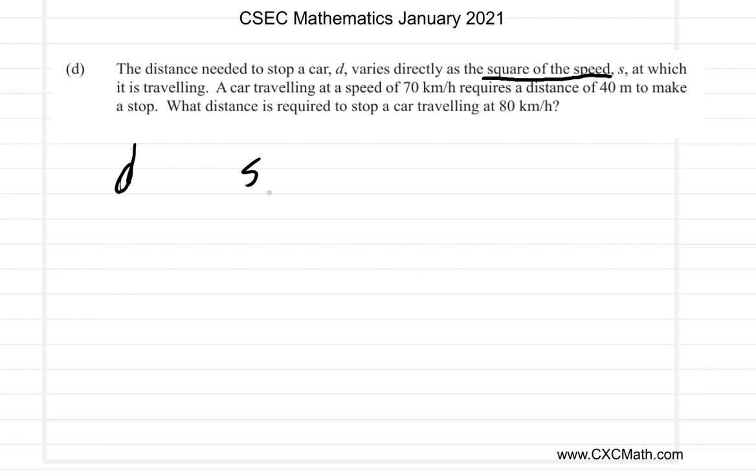A car traveling at a speed of 70 kilometers per hour requires a distance of 40 meters to make a stop. What distance is required to stop a car traveling at 80 kilometers per hour?